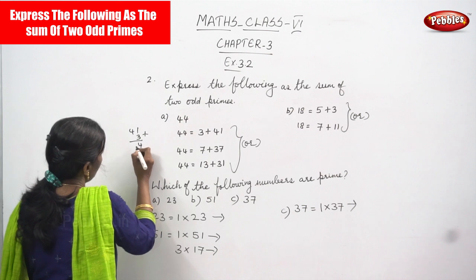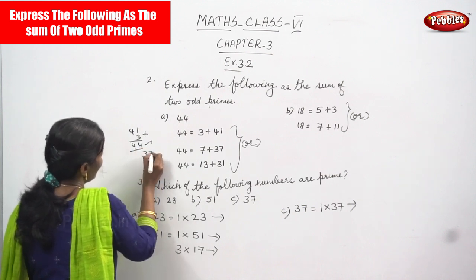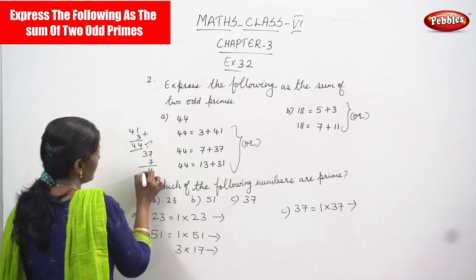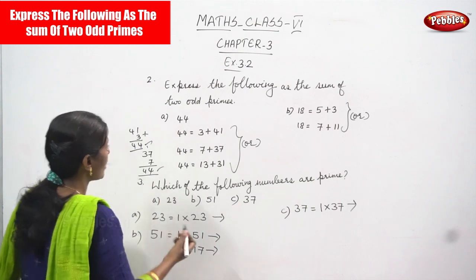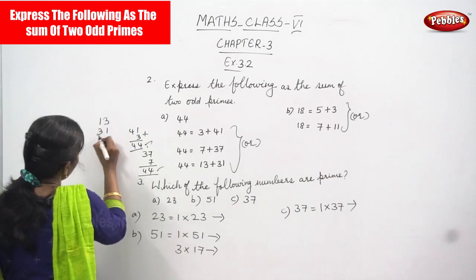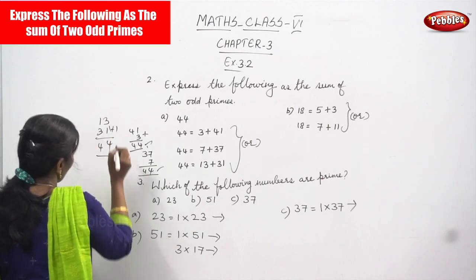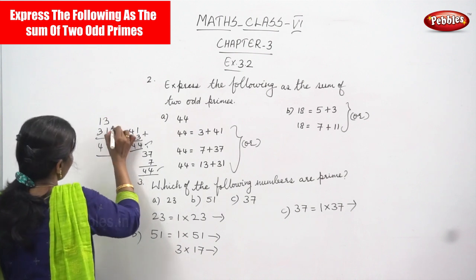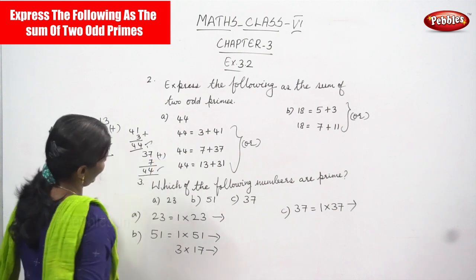So 41 plus 3 gives 44. Next, 37 plus 7: 7 plus 7 is 14, carry 1, 3 plus 1 is 4 — you get 44. Again, 13 plus 31: 3 plus 1 is 4, and 1 plus 3 is 4 — you get 44 again.